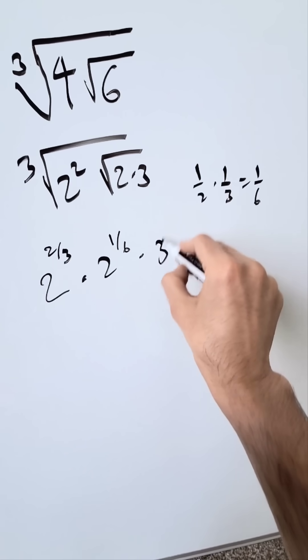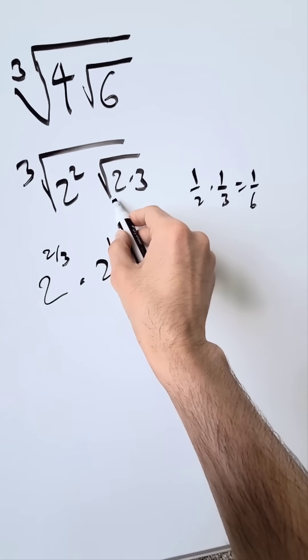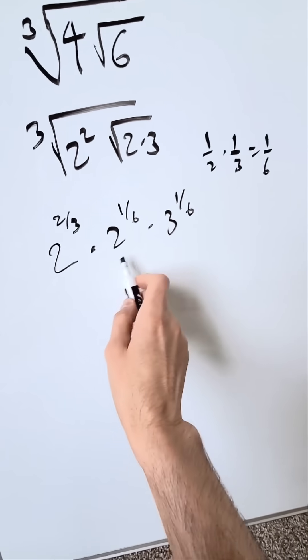I have 2 to the power of 1/6 and I have 3 to the power of 1/6 because the 3 is a square root and a cube root. Hence, bring these together.